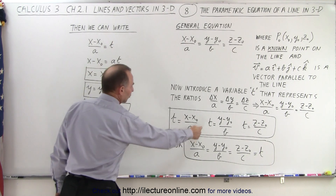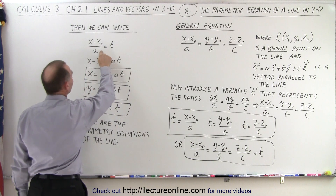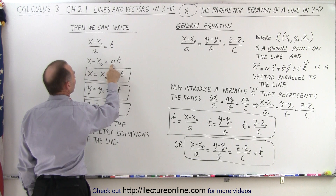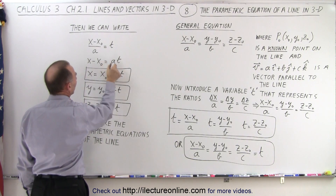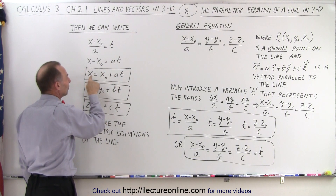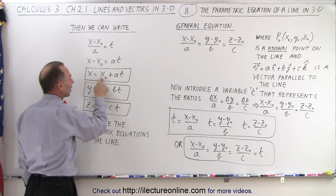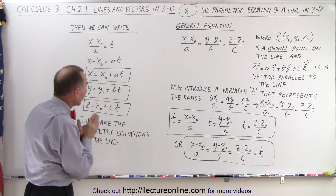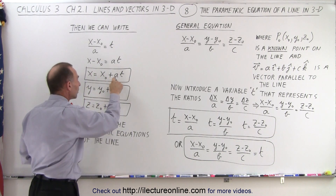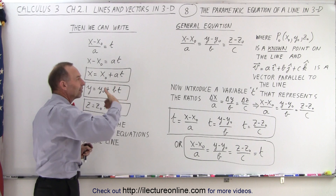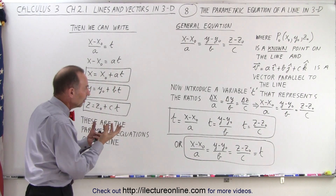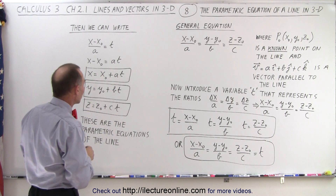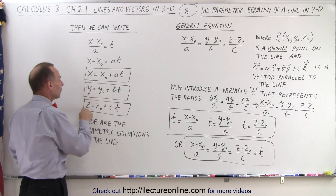If we now take one of these equations — for example, this one right here — and cross multiply with a, we have x minus x₀ equals a times t. Moving x₀ over, we can now see that x is defined as x₀ plus the length of the x component of the parallel vector times t, where t is the parameter representing all of these components x, y, and z. We do the same for y and the same for z.